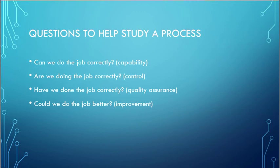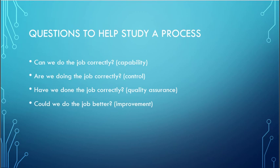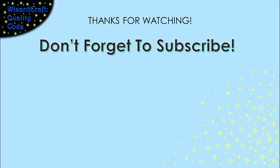When we talk about quality, there are several different aspects we can use to study our process. The first question is: is the process capable — can we do the job in a way that meets the requirements? The second question is: is the process in control — are we doing the job correctly and have we controlled that variation? There is also a quality assurance question: have we done the job correctly? That looks backwards through inspections and reviews. And we're always thinking about whether we could do the job better, because we're always looking to improve the process.